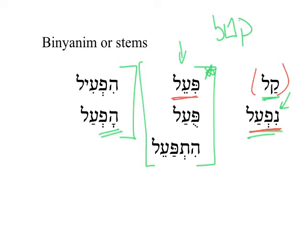Pu'al is just the passive of piel. And then hitpa'el is either reflexive or passive. Hiphil has a sense of causation. And hofal is passive of hiphil.